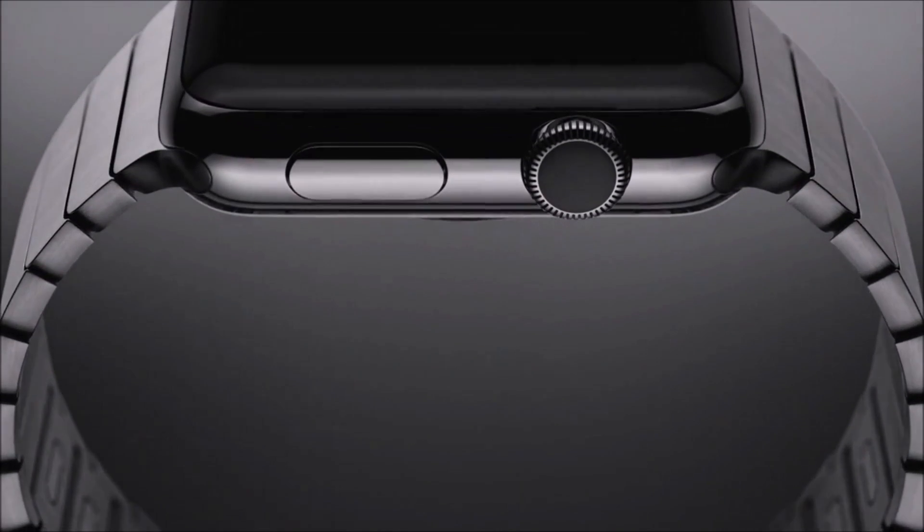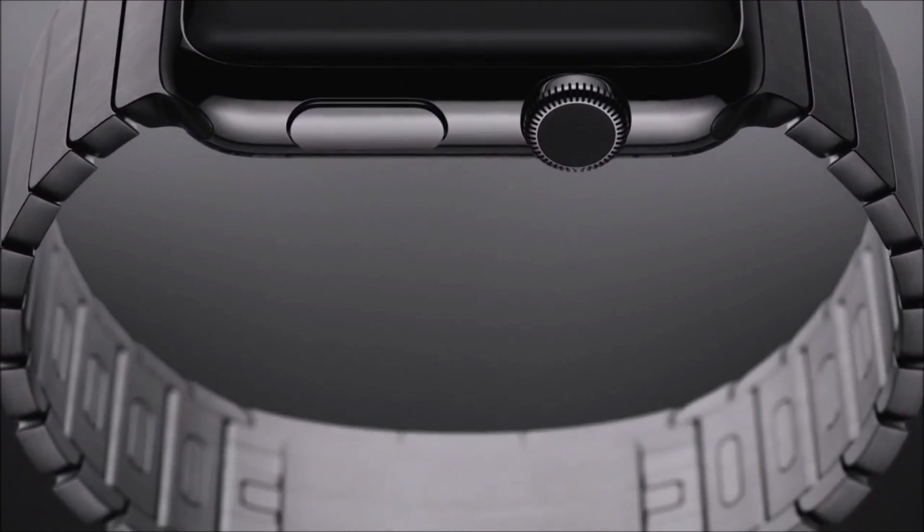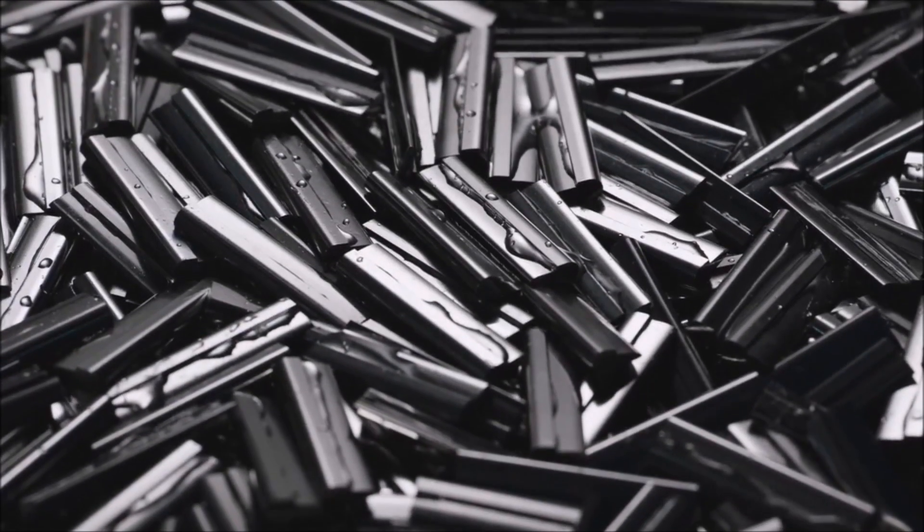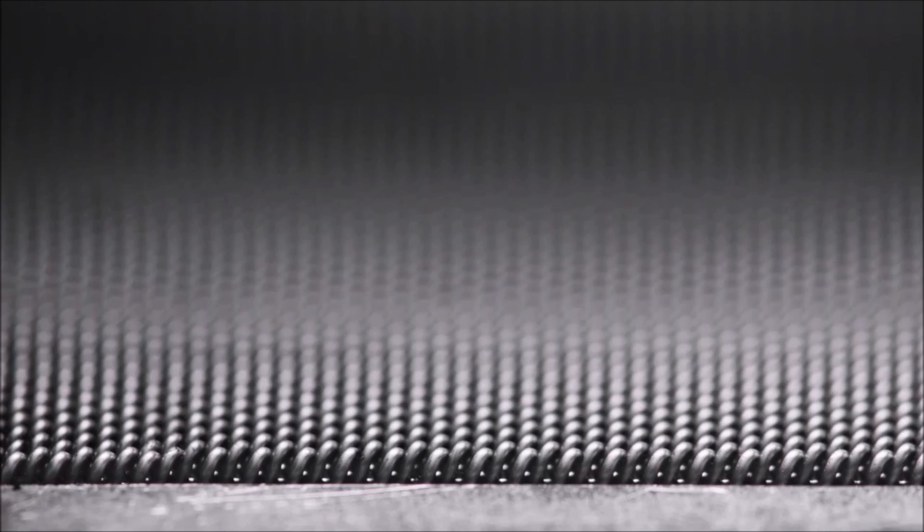The bands receive the same careful consideration. Each link bracelet is made from more than 140 individual parts. The Milanese loop is made from fine steel coils, woven together to create a flowing mesh with a fabric-like feel.